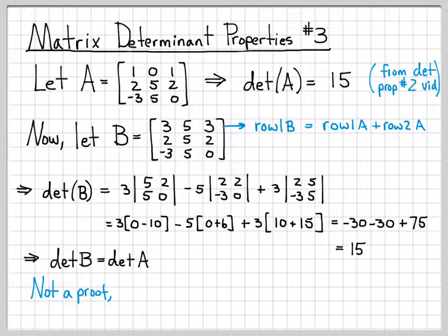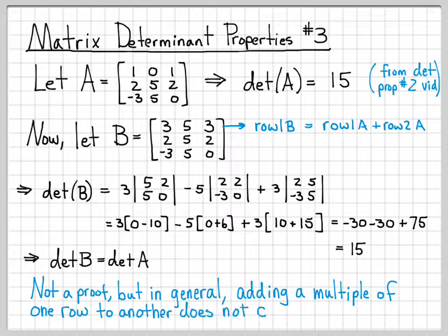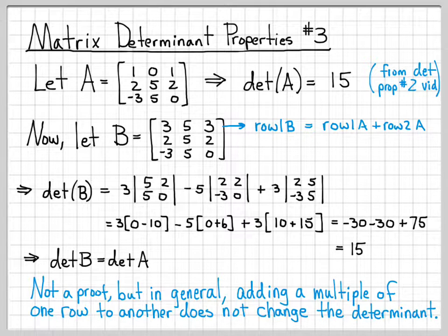So we've done an example of demonstrating that property. So this is not a proof. But in general, if we add a multiple of one row to another one, the determinant does not change. So the value of the determinant remains unchanged. And that's just the property we have demonstrated here in this little example.